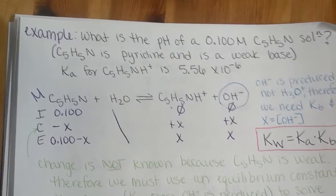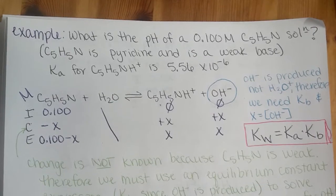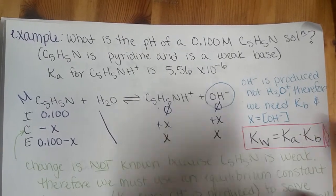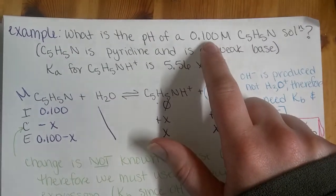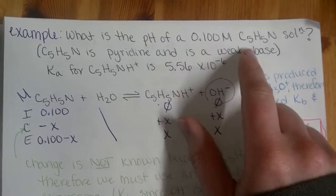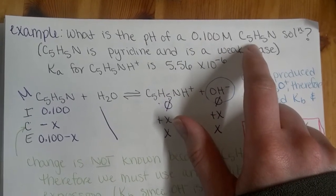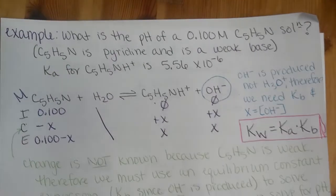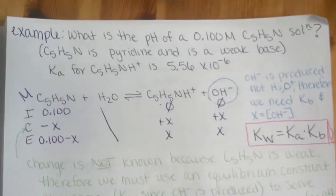All right, another question: what is the pH of a 0.100 molar solution? So again, same concentration as the previous two, but we have C5H5N, and this is called pyridine, and it is a weak base.